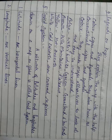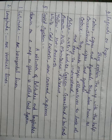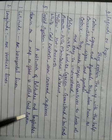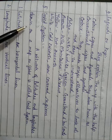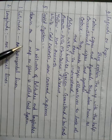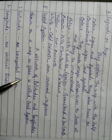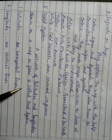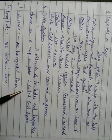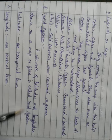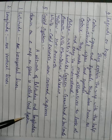After that, our next topic is the grid system. The grid system is a network of latitude and longitude drawn on a map or a globe. When they are drawn together, we call it a grid system.